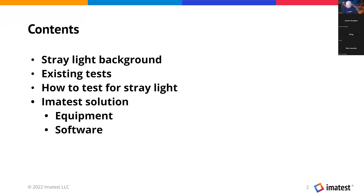我们先介绍今天课程的顺序。我们先介绍什么叫做砸闪光。再来我们要介绍现有的测试方式。再来是新的测试砸闪光的方式。最后我们介绍我们的解决方案，包括我们的硬件和软件。Then we'll talk about the existing tests, followed by the new and developing tests, and finally Imitest's solution, both equipment and software, for stray light testing.